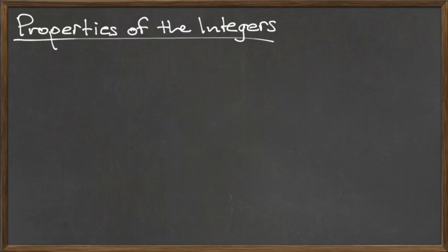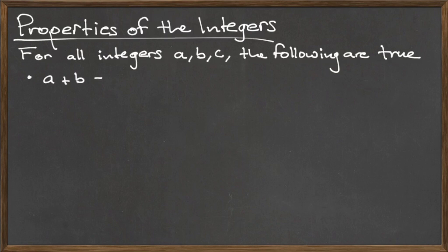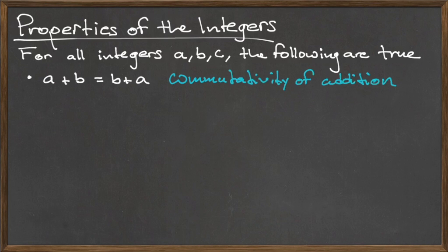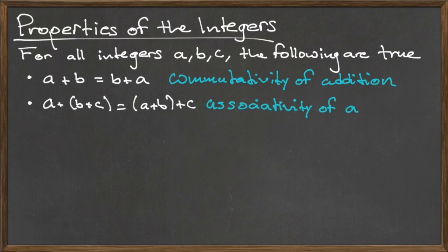Two of these properties deal with addition, two deal with multiplication, and one combines the two operations together. The first property of the integers is known as the commutativity of addition, which states that for any two integers A and B, A plus B is equal to B plus A — the order in which you add integers does not matter. The second property is the associativity of addition, which states that for any integers A, B, and C, A plus the quantity B plus C is equal to the quantity A plus B plus C — the order in which you add groupings of integers does not matter.